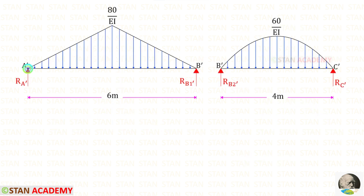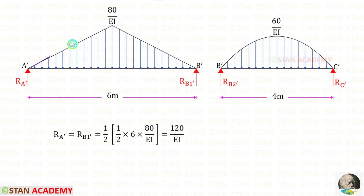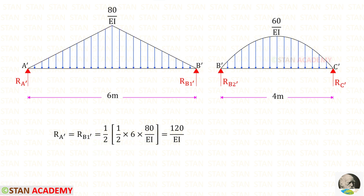In the conjugate beam, let us label the points as A dash, B dash, and C dash. We need to find vertical reactions RA dash, RB1 dash, and RB2 dash. The diagram for AB is symmetrical, so RA dash and RB1 dash can be found by dividing the area by 2. The area formula of a triangle is half times base times height. Here the breadth is 6 and height is 80 upon EI. Dividing the area by 2, we get RA dash and RB1 dash as 120 upon EI.